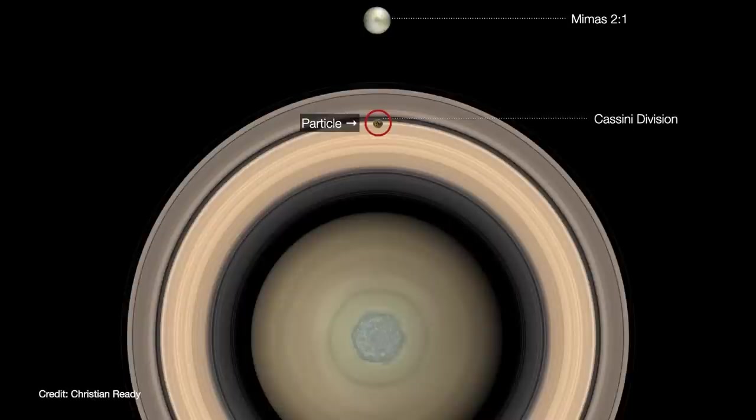Resonances do play a role in maintaining ring systems. For example, let's say there's a particle near the inner edge of the Cassini division in Saturn's rings. When the particle nears the inner edge, it enters into a two-to-one resonance with its moon Mimas. That means the particle completes two orbits for every single orbit of Mimas. With each pass, Mimas pulls the particle closer until it eventually crosses the Cassini division. At that point, the particle falls out of resonance with Mimas and takes up a new orbit in the outer ring.